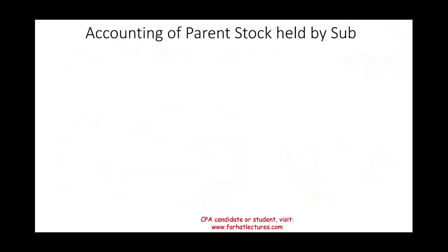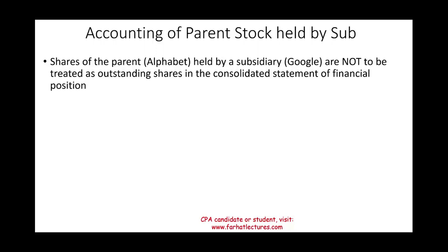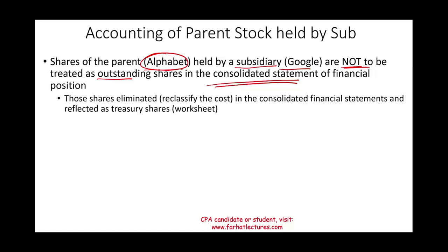The first accounting issue is how to account for parent stock held by the subsidiary. Using Alphabet and Google as an example: shares of the parent company (Alphabet) held by the subsidiary (Google) are not treated as outstanding in the consolidated financial statements. When we consolidate, those shares held by Google of Alphabet are eliminated, and we reclassify the cost of those purchases from investment to treasury stock — that is a worksheet entry.